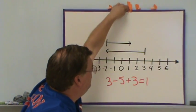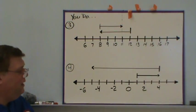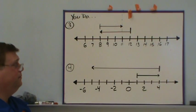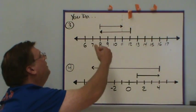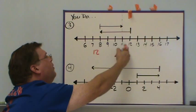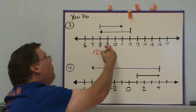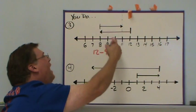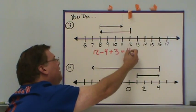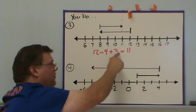Give these next problems a try — find the equation for each number line. Welcome back. For the first one, we have a starting point of 12. Going to the left four steps means subtracting four. Then going to the right three steps means adding three. We ended up at 11. So this represents the equation 12 minus four plus three equals 11.